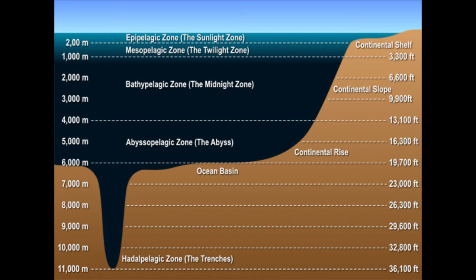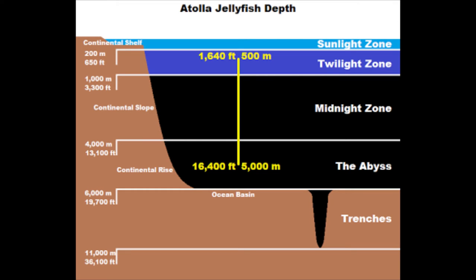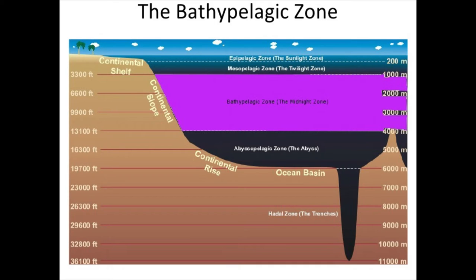Their typical habitat ranges from 3,280 feet below the surface to more than 13,000 feet below the surface of the ocean. This region is known as the midnight zone, because no sunlight penetrates these depths.